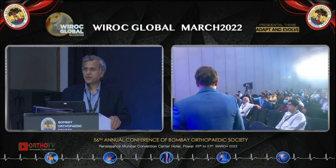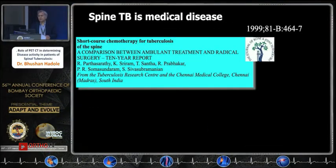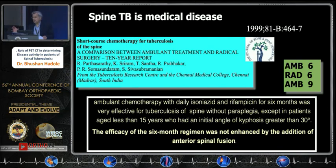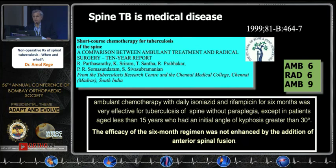Friends, though I am going to talk on operative treatment of spinal tuberculosis, let me begin by expressing that spinal TB is a medical disease. Everyone should read the MRC trial article done 20 years back — a classic paper where they compared 6 months of ambulatory treatment with 6 months AKT, radical treatment (anterior debridement) with 6 months AKT, and ambulatory treatment with 9 months AKT in patients without paraplegia. They concluded that patients aged less than 15 years and those with an initial kyphosis angle more than 30 degrees did not do well; others did well. Anterior spinal fusion did not improve results compared to non-operative treatment. So remember that spinal TB is a medical disease.